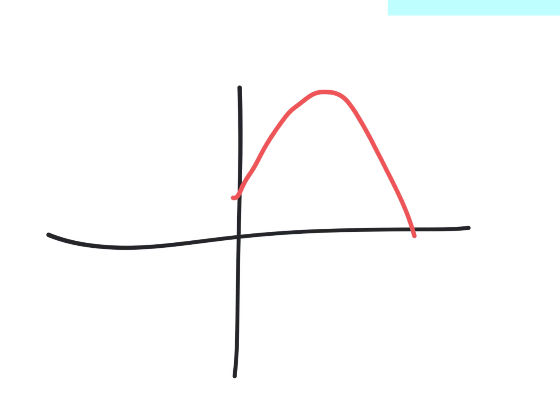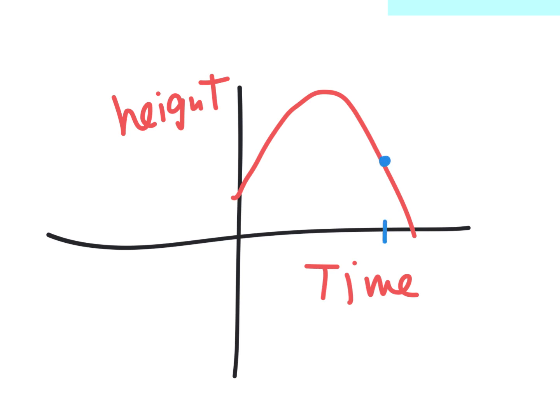If I threw a ball, this axis is height above the ground and this axis is time. That point right there is like two seconds — there's no way you can keep a ball in the air for two minutes, maybe two seconds with a pretty strong arm. So if that's two, it's two seconds, and let's say the height is 20 feet. This spot means two-comma-twenty: in two seconds, the ball is at 20 feet off the ground.